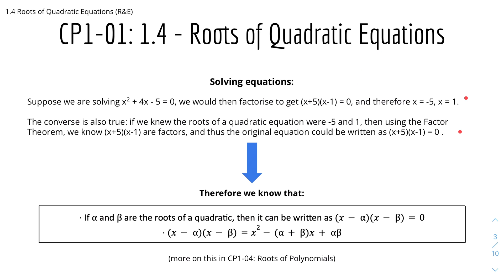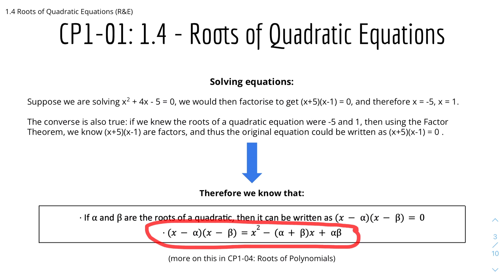Using this logic, if α and β are the roots of a quadratic equation, then the equation can be written as (x − α)(x − β) = 0. Expanding this gives x² − (α + β)x + αβ = 0. This is the most basic thing you need to know for complex numbers, and we'll look more into this in chapter 4 for roots of polynomials.